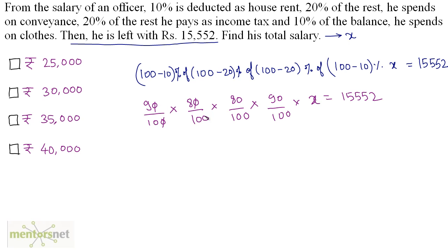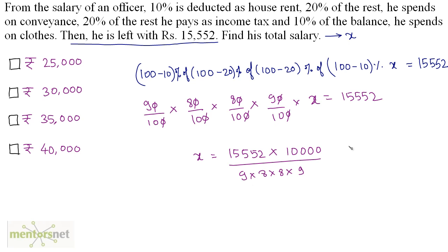Cancelling out the zeros, X equals 15,552 times 10,000 divided by (9 × 8 × 8 × 9), which gives X = 30,000. Therefore, the answer is option number 2.